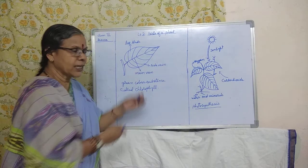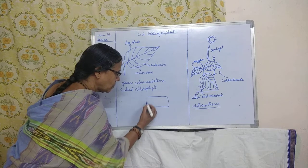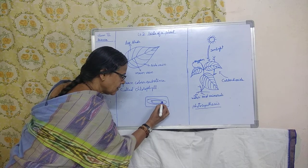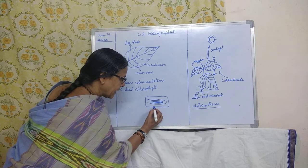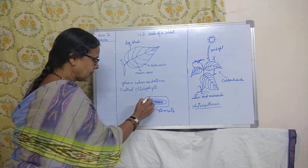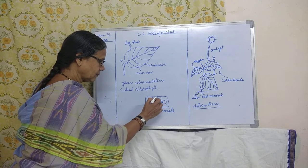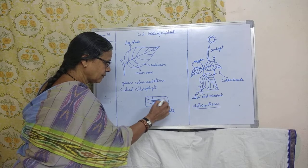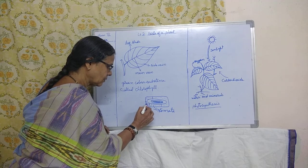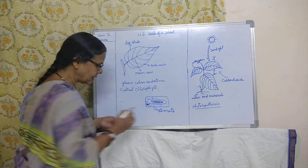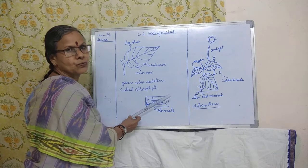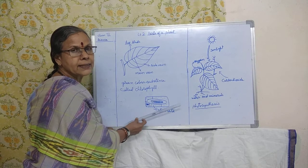The diagram of stomata looks like this. So when you see this diagram you will find the stomata. Stomata — S-T-O-M-A-T-A. These are the tiny openings inside the leaves which we cannot see with our naked eyes.